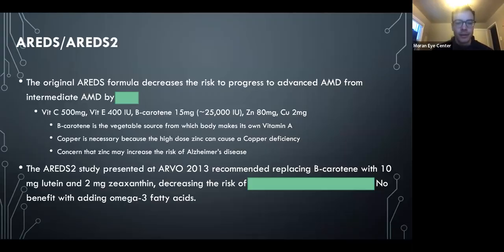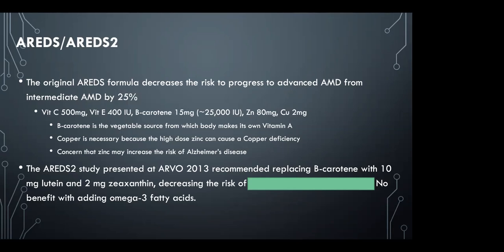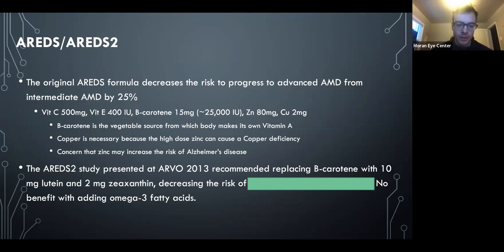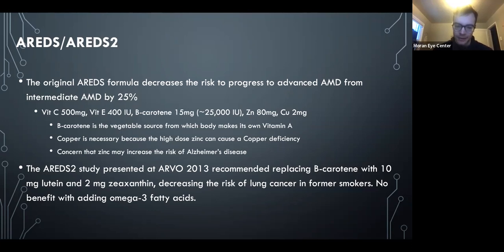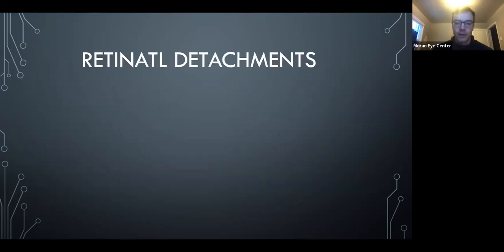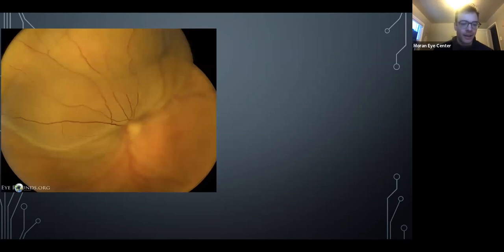The original AREDS formula decreased the risk of progression to advanced AMD from intermediate AMD by about 25%. The original formulation has largely been replaced — they switched beta-carotene for lutein and zeaxanthin. They will almost for sure ask you why they made that switch: in smokers there was a slightly increased risk of lung cancer when they looked back at the data.